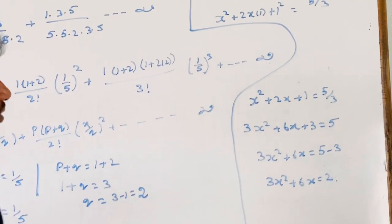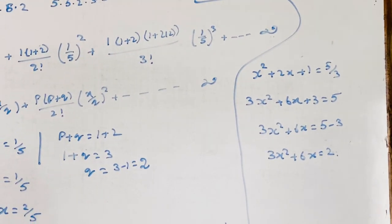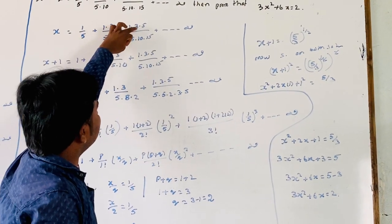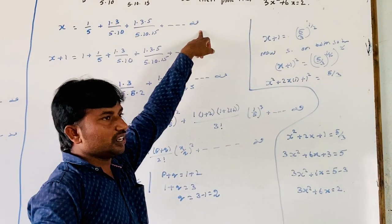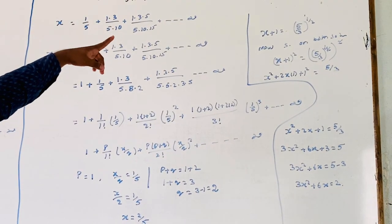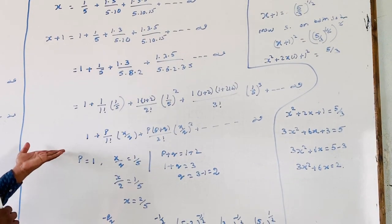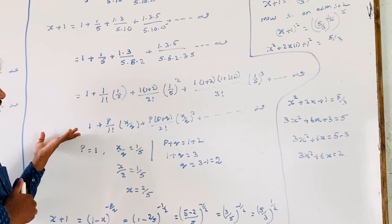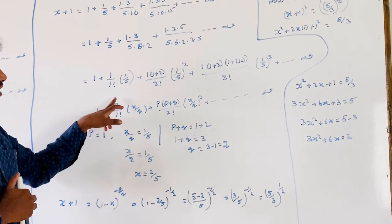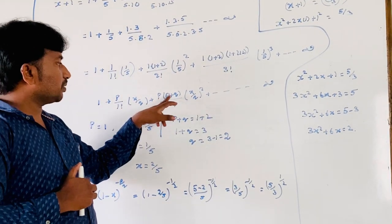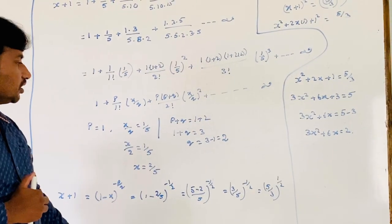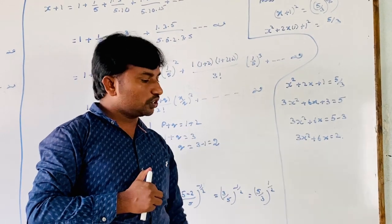Hence proved: 3x² + 6x = 2. To summarize, given x = 1/5 + (1·3)/(5·10) + (1·3·5)/(5·10·15) + ... to infinity, we proved 3x² + 6x = 2 by applying the binomial theorem for rational index, where the formula is (1 − x)^(−p/q) = 1 + p/(1!)·(x/q) + p(p+q)/(2!)·(x/q)² + ...